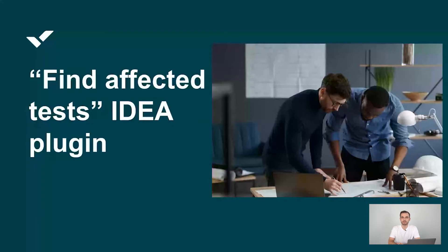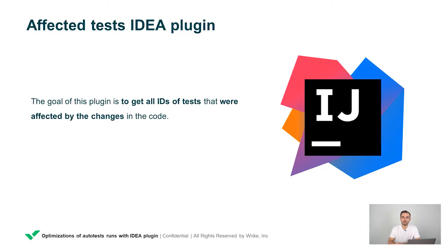To solve this problem, we created the "Find Affected Tests" IDEA plugin. The goal of this plugin is to get all IDs of tests that were affected by the changes in the code. We use IntelliJ IDEA as our IDE, and its functionality can be expanded by plugins that you can download or write yourself.